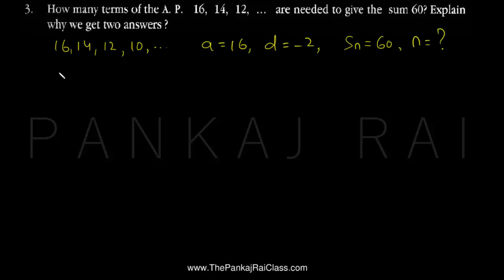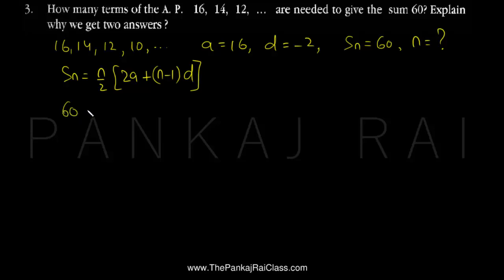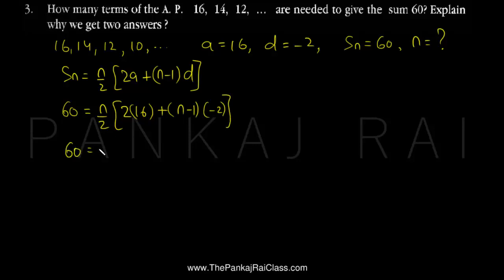We can use the formula for Sn which is n by 2 times (2a plus (n minus 1) times d). Here Sn is given as 60, so let me substitute: 60 equals n by 2, then 2a — the first term a is 16 — so 2 into 16 is 32, and d is minus 2, so plus n into minus 2, giving minus 2n.